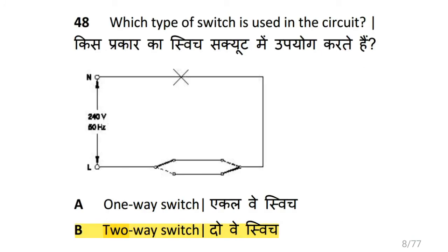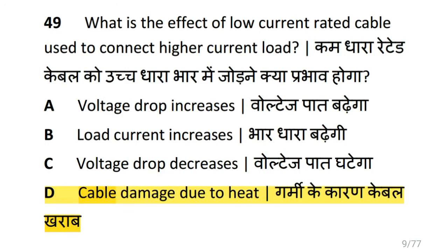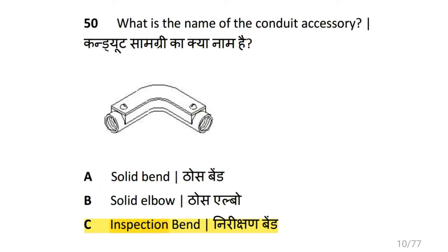Which type of switch is used in the circuit? That is a 2-way switch. What is the effect of a low current rated cable used to connect a higher current load? That is cable damage due to heat. What is the name of this conduit accessory? That is inspection bend.